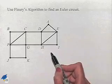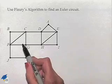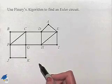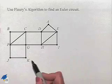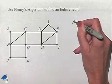One, two, three, four edges off of E, one, two, three, four edges off of F, four edges off of G, one, two, three, four edges off of H, two from I, two from J, and two from K. So we have all even vertices.